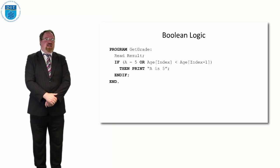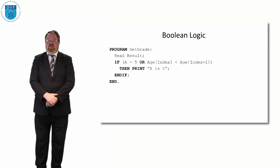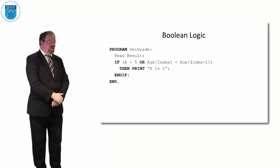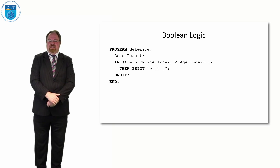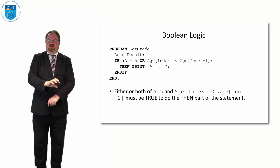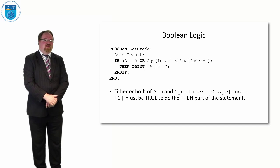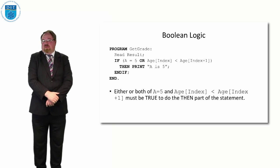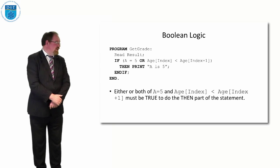So if we did something like, if A is equal to 5 OR age index is less than age index plus 1, print A is 5. Then it would only print A is 5 if age index was less than age index plus 1 OR A was 5 OR both. It would go into the then part, but if both weren't true, then it wouldn't go into the then part.